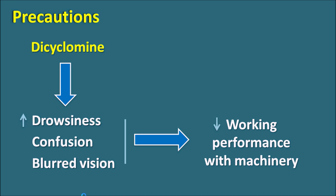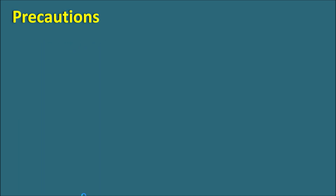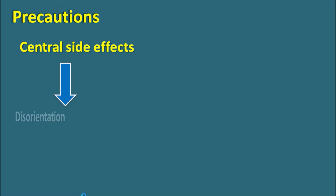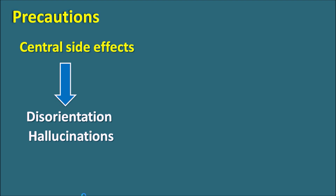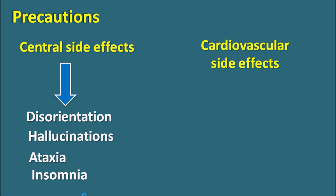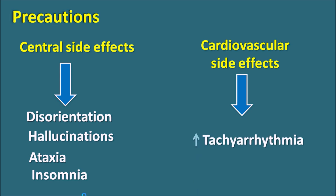Whenever Dicyclamine is prescribed for a longer period, the patient should be given precaution as drowsiness and blurred vision may impair their working activity. Other important central side effects include disorientation, hallucination, ataxia (loss of balance), insomnia, and lack of sleep. Dicyclamine can also produce cardiovascular side effects — as an anticholinergic it inhibits M2 receptors on the heart, resulting in increased rate of cardiac contraction, producing tachycardia and tachyarrhythmias. These symptoms should be closely monitored.